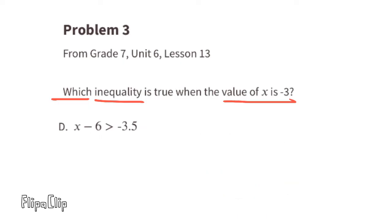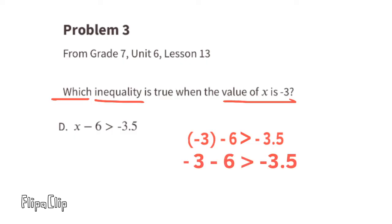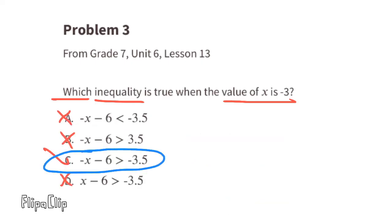Option D: x minus 6 is greater than negative 3.5. Substituting x with negative 3: negative 3 minus 6 is greater than negative 3.5. Since negative 3 minus 6 is negative 9, and negative 9 is not greater than negative 3.5, this is not true. C is the only inequality that is true when the value of x is negative 3.